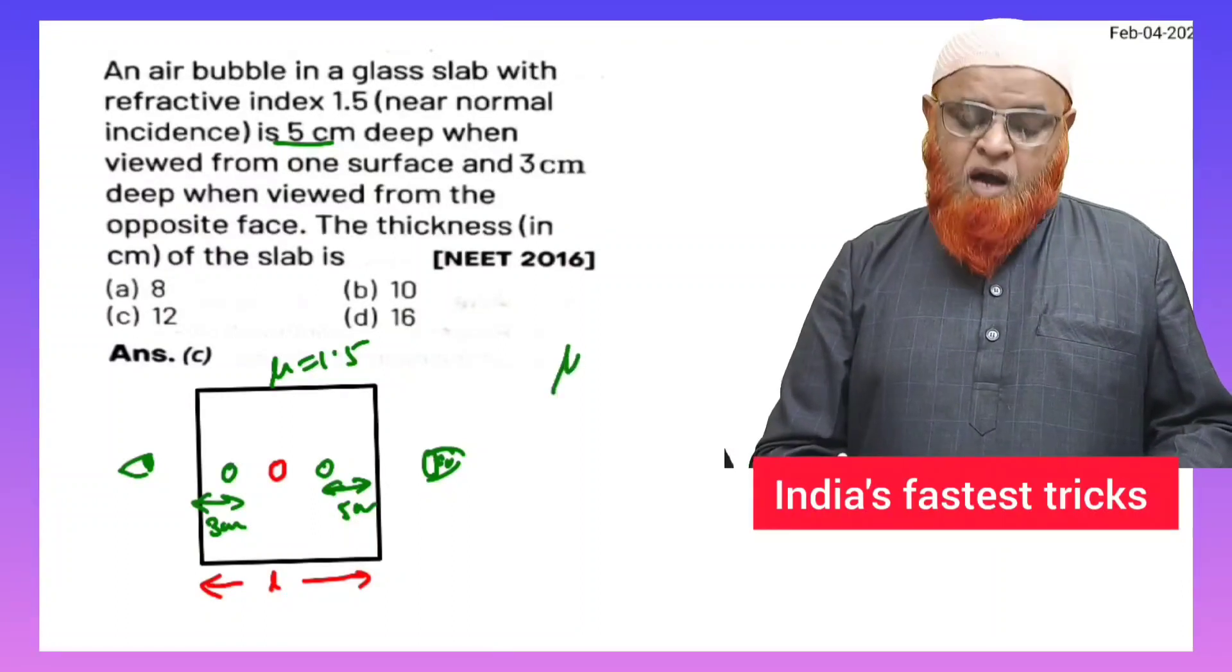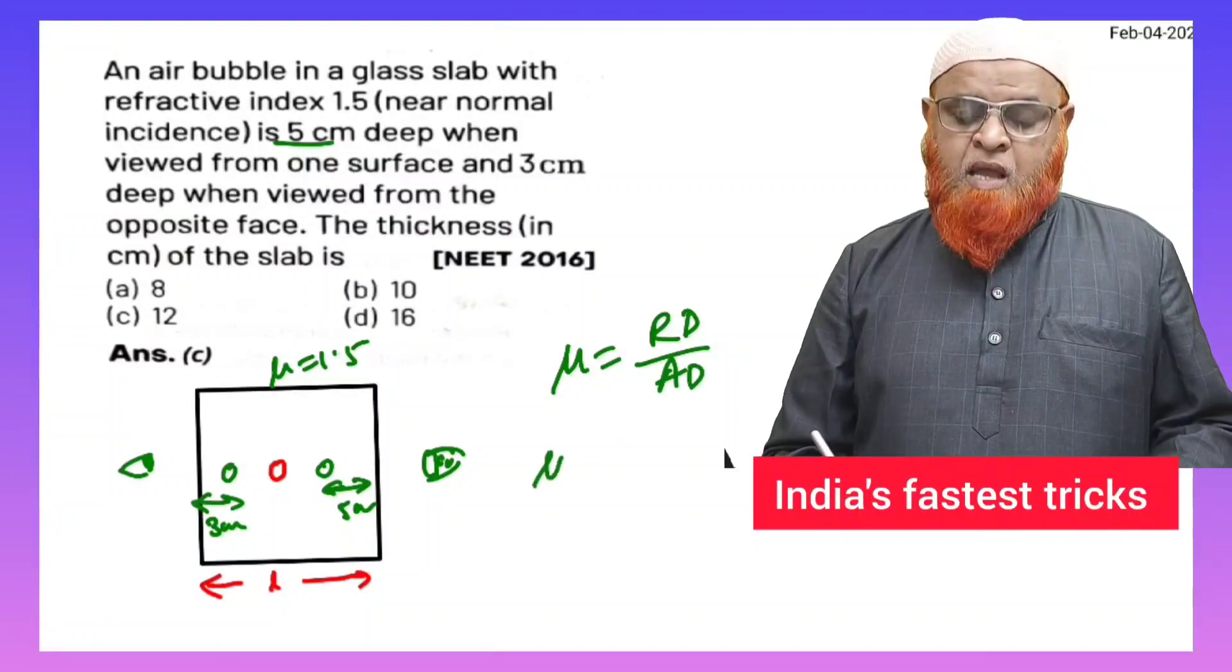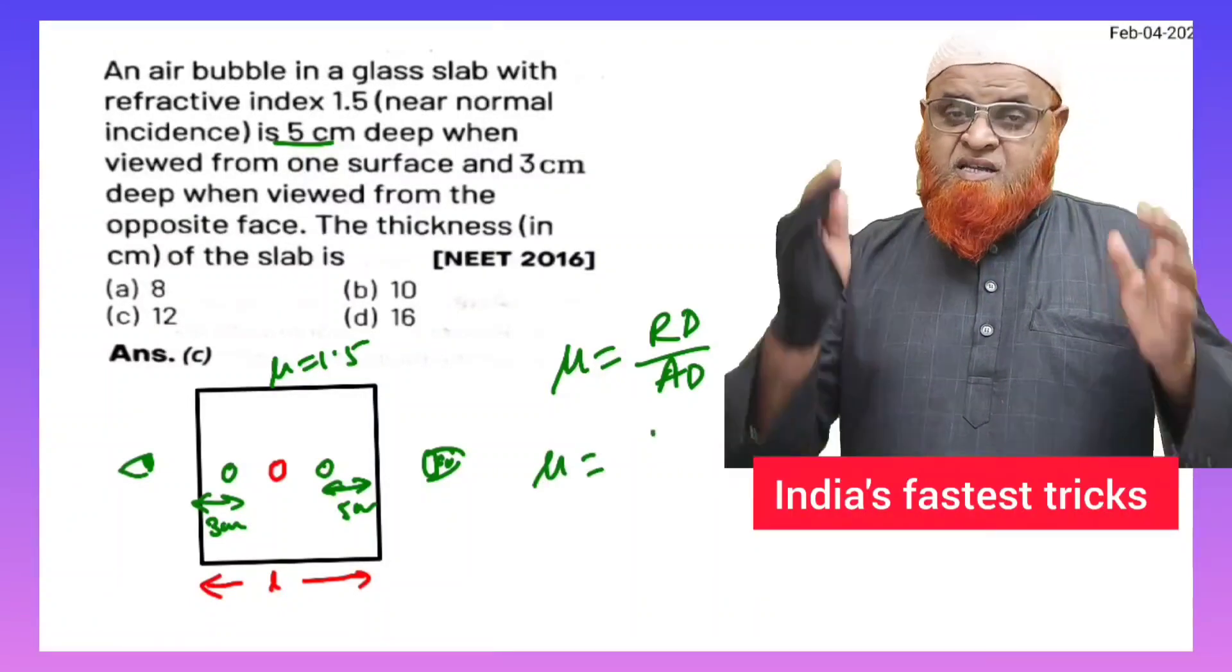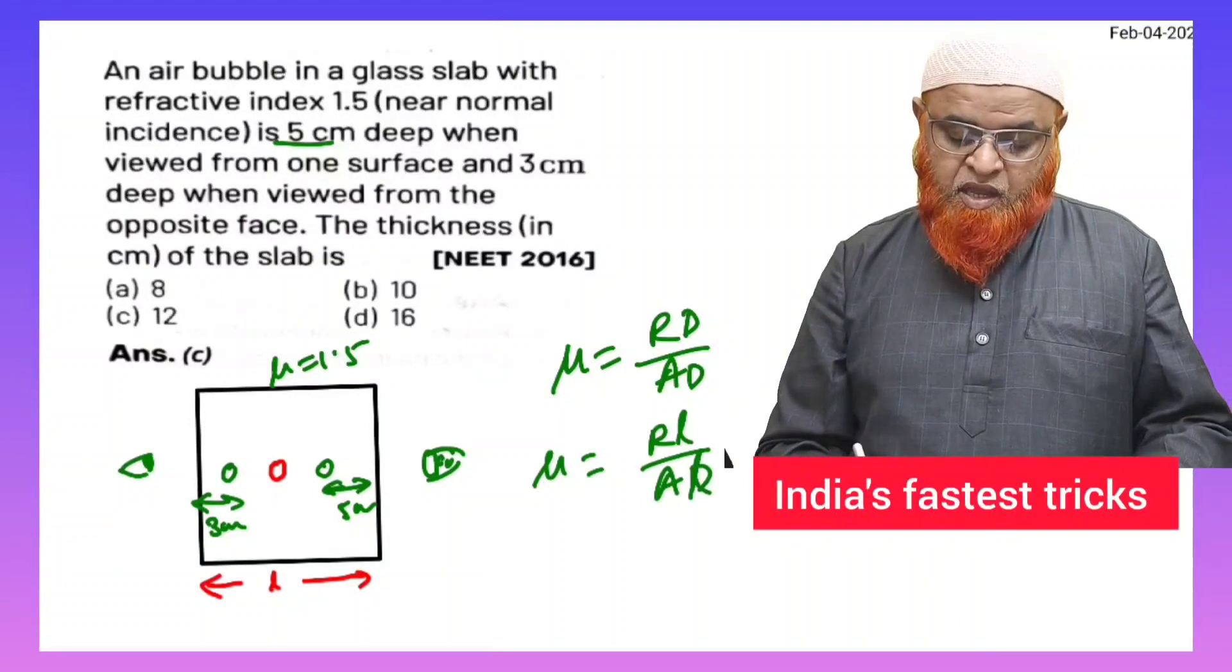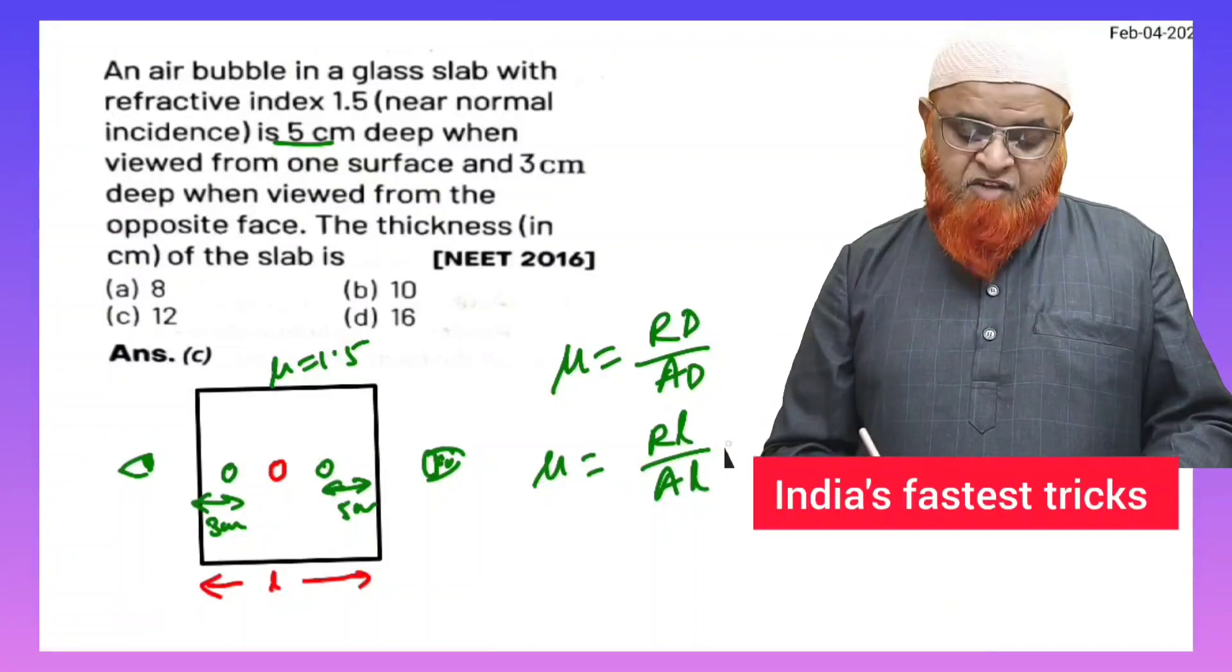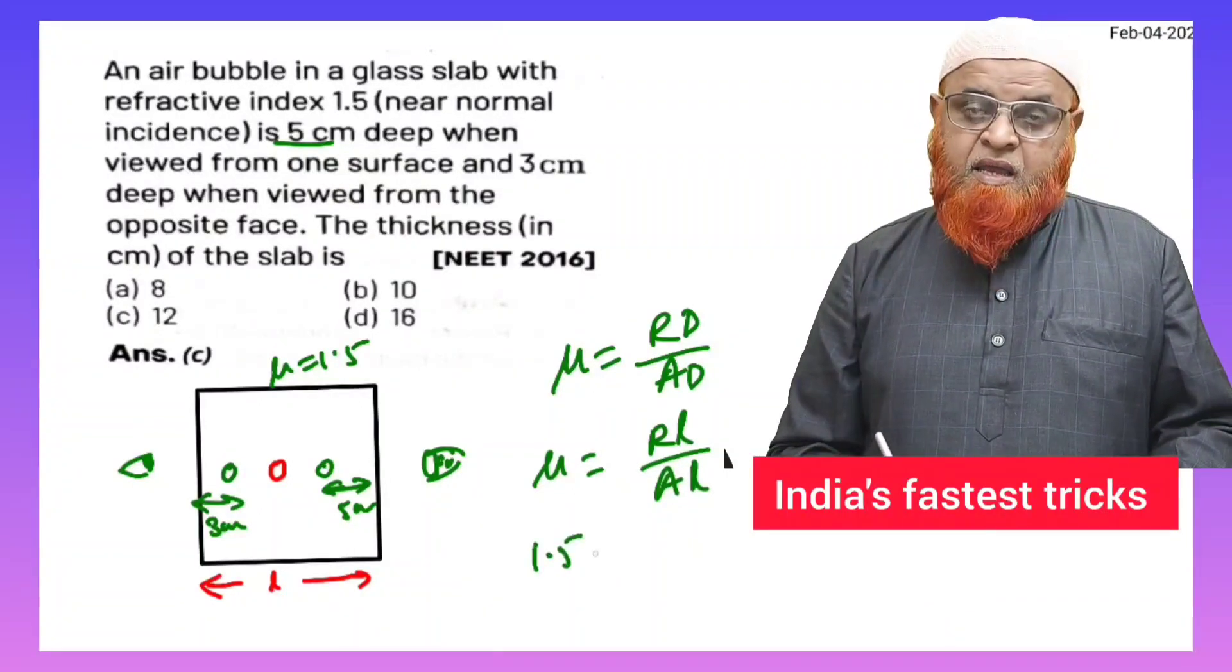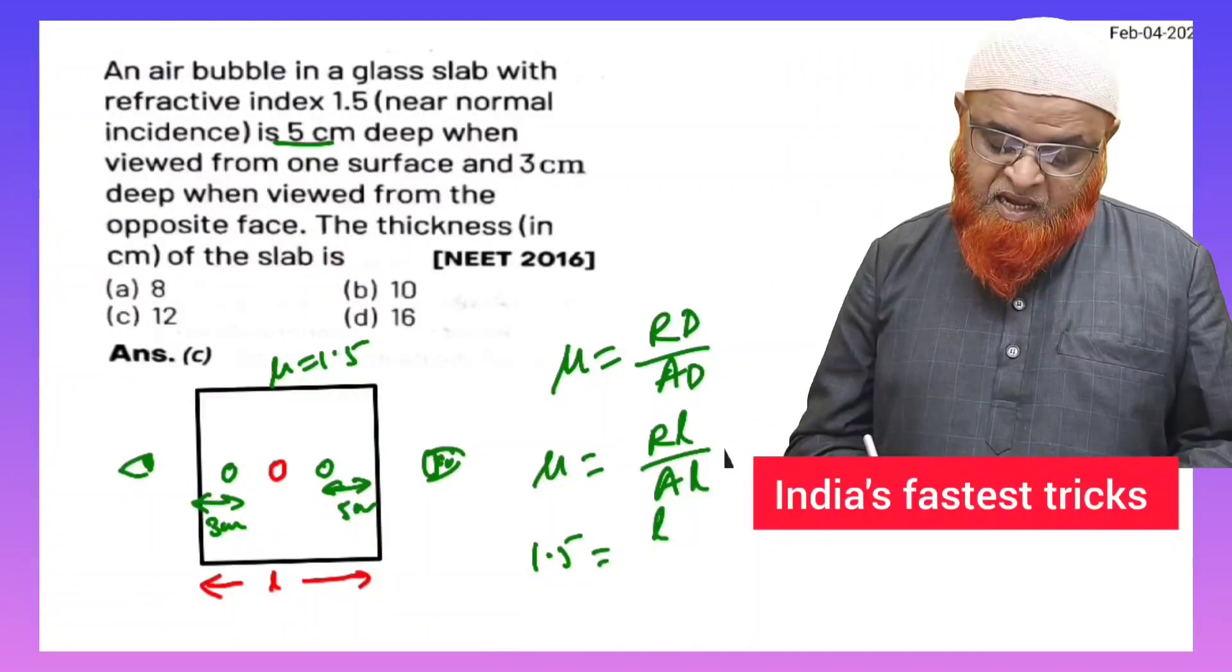So you all know that refractive index is nothing but real depth by apparent depth. But in this case you can consider the refractive index as real length by apparent length here. So real length by apparent length. And refractive index is given by 1.5 here. And he is asking us to find out the real length which is taken as L.